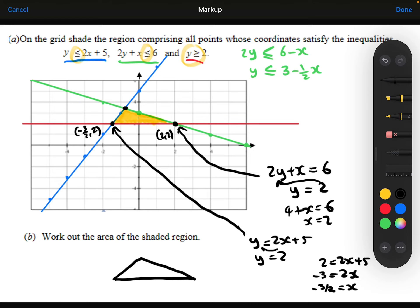And then finally, the third intersection point is where the blue line intersects with the green line. So if I substitute this into here, I get 2 lots of the 2x plus 5 plus the x equals 6. So x is minus 4.5.